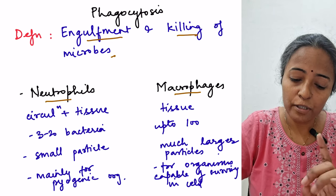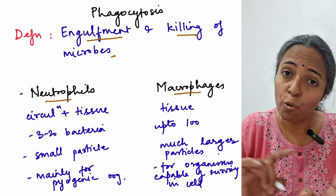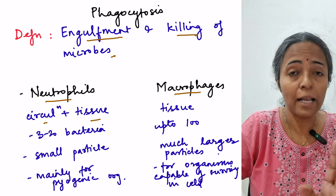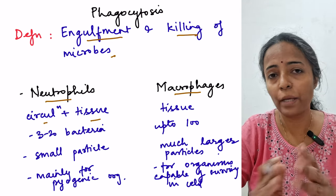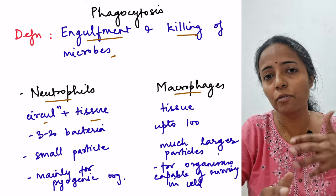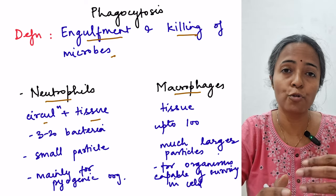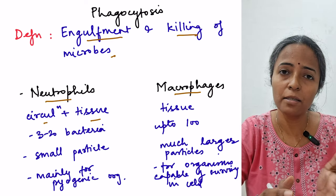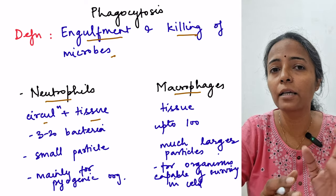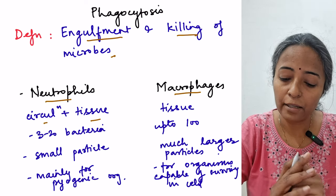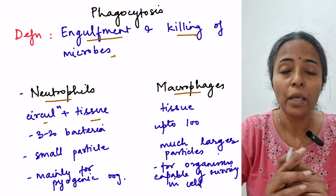Neutrophils work both in circulation as well as in tissue, as they can go from circulation into the tissue by diapedesis, and there they can engulf the microorganism and kill it.